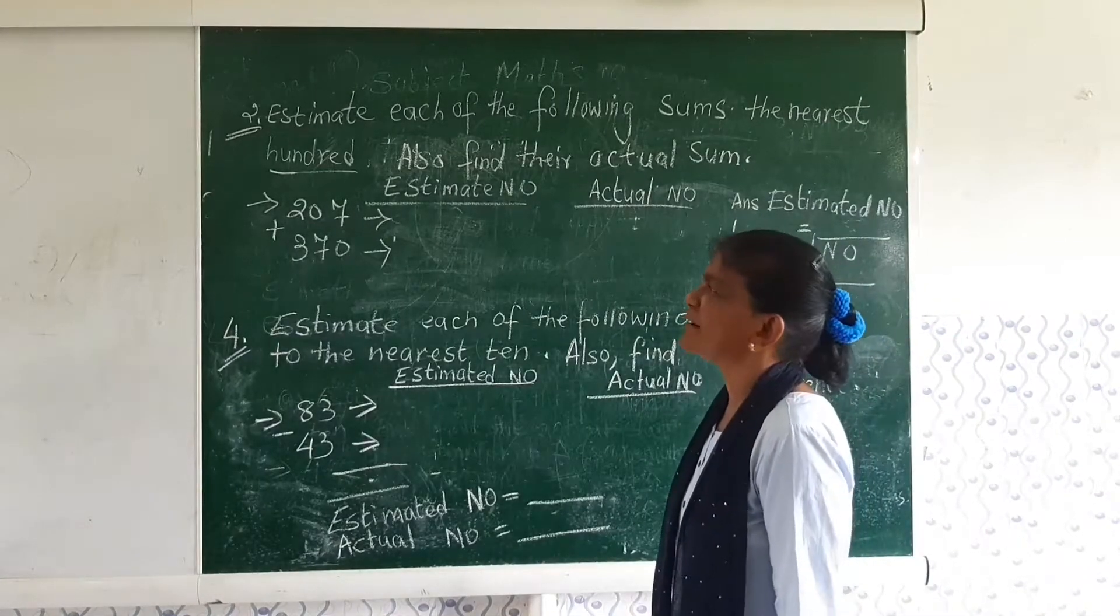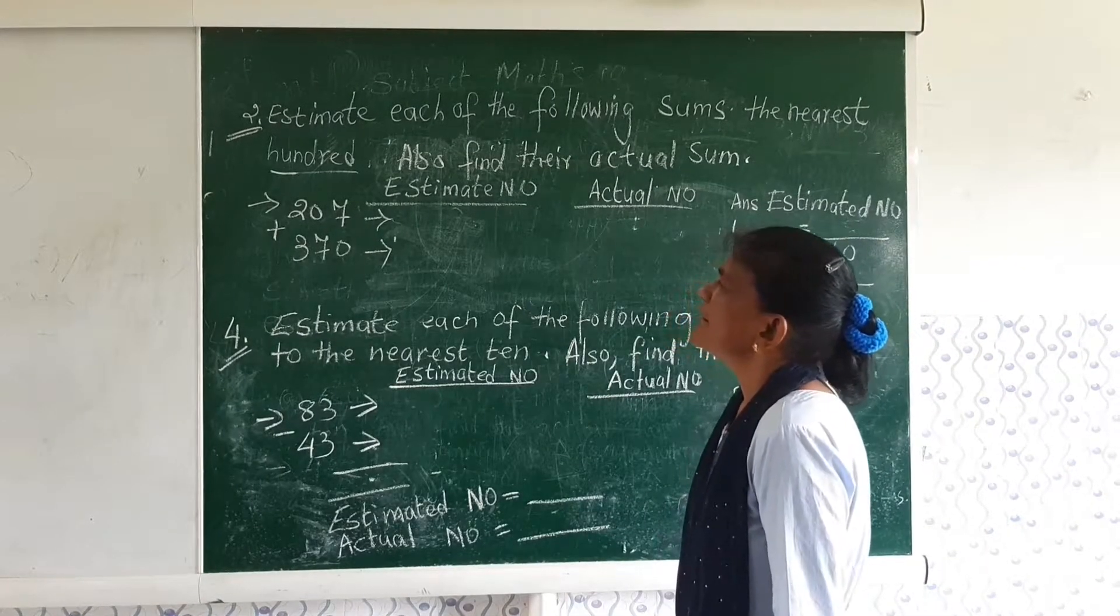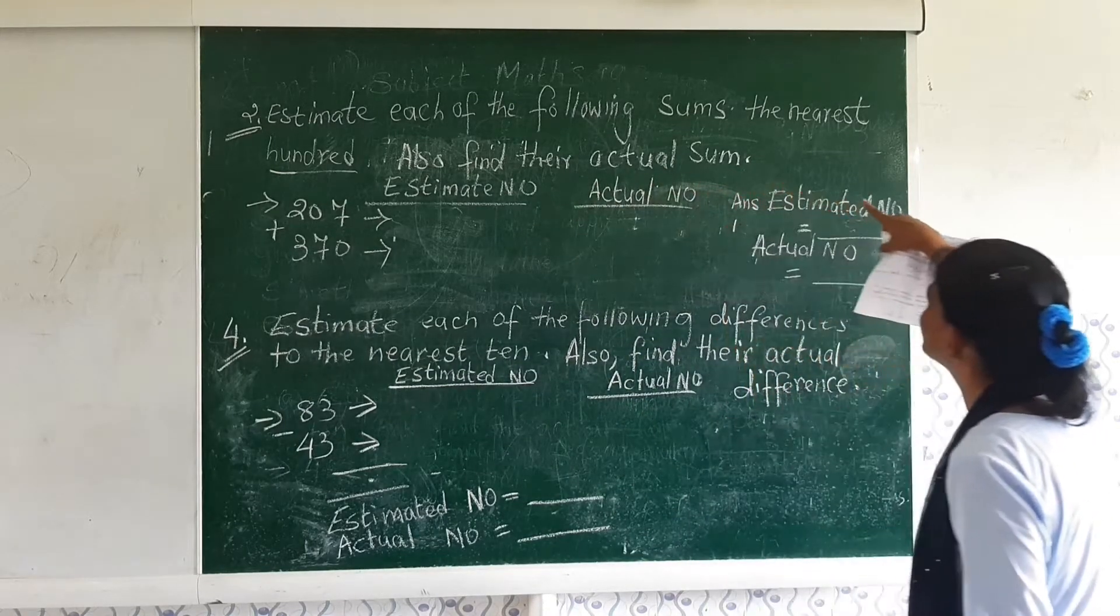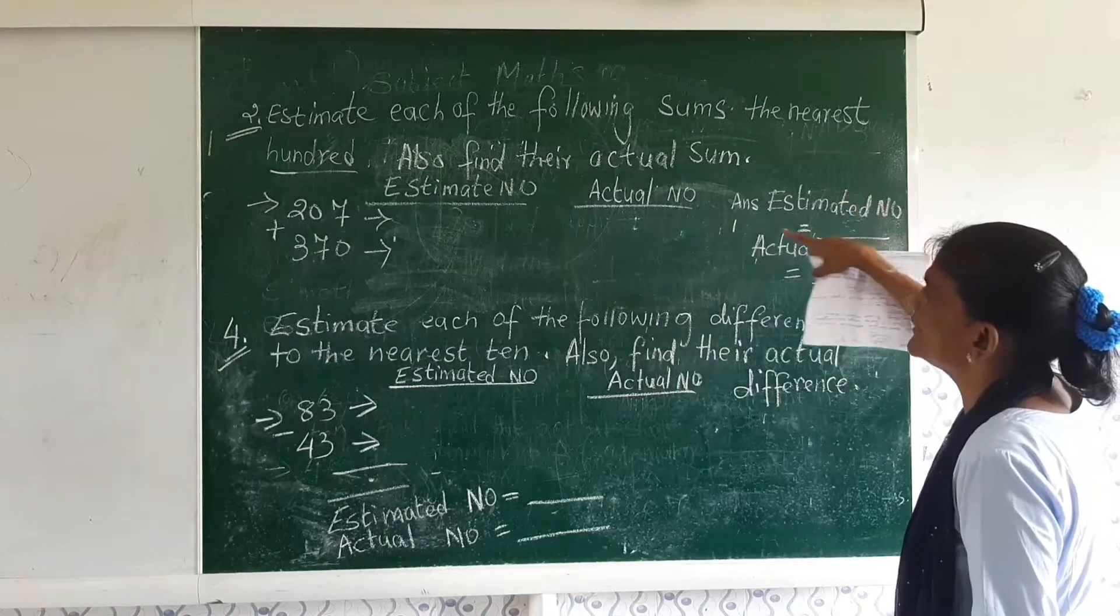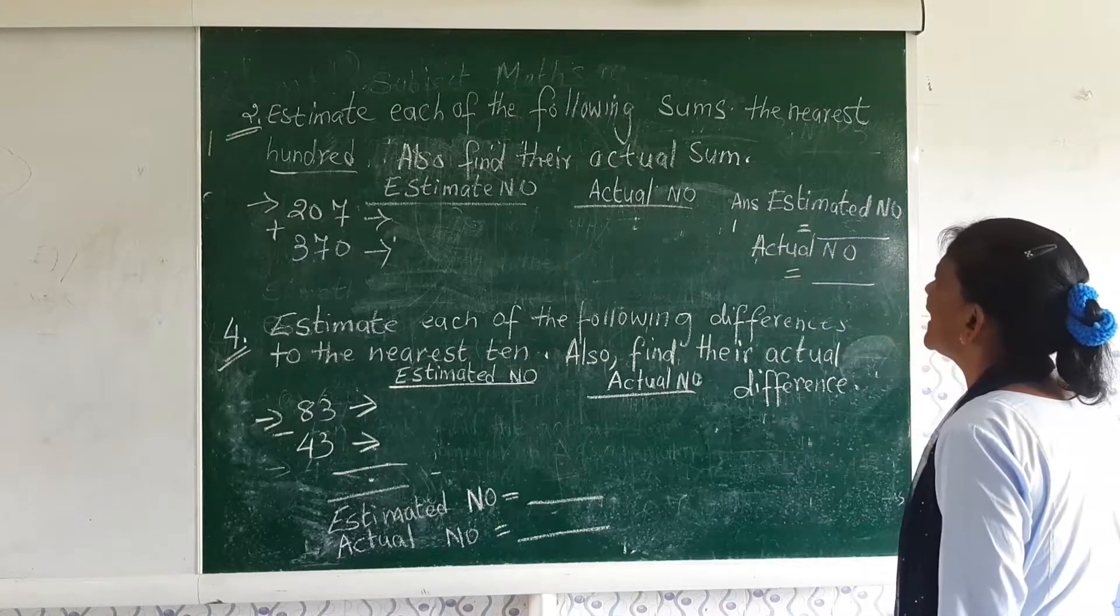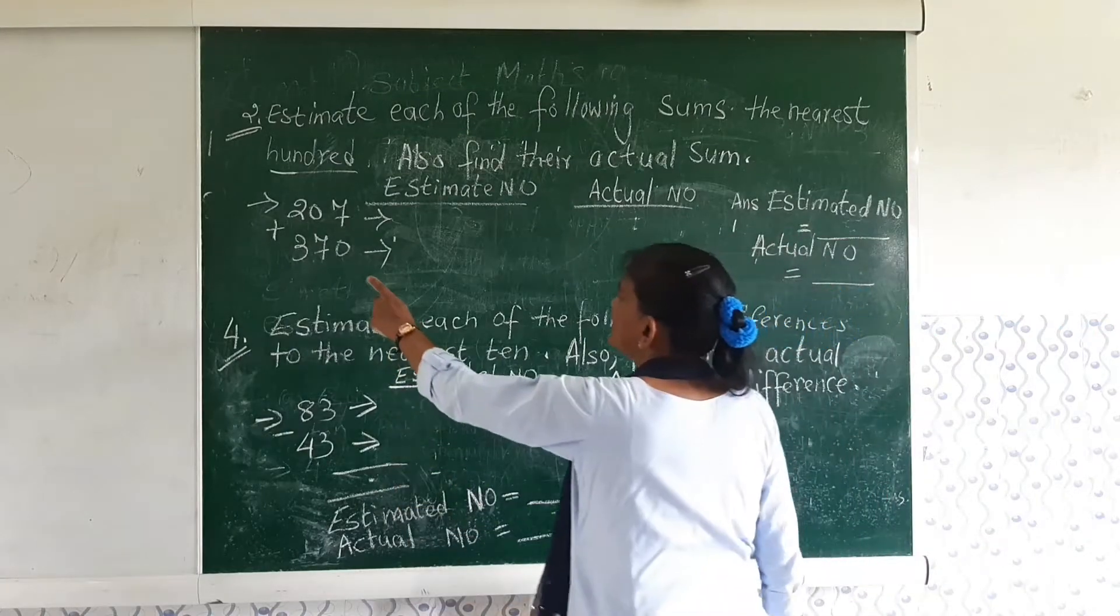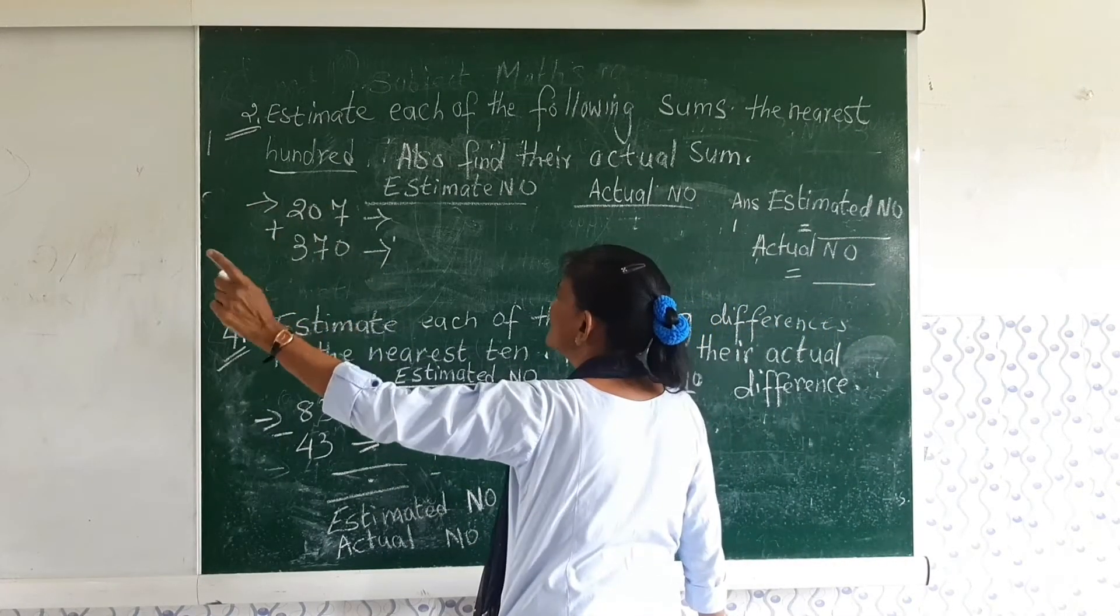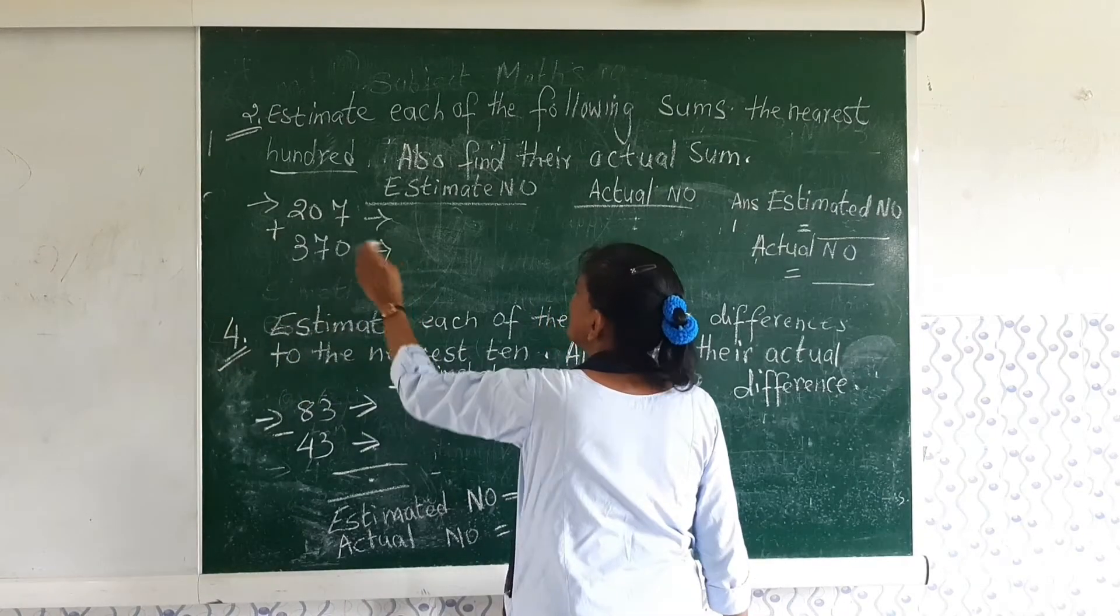Children, let us go to sum number 2. I am reading the question. Estimate each of the following sums to the nearest 100. Also find the actual sum. Here 270, the 7 is less than 5.